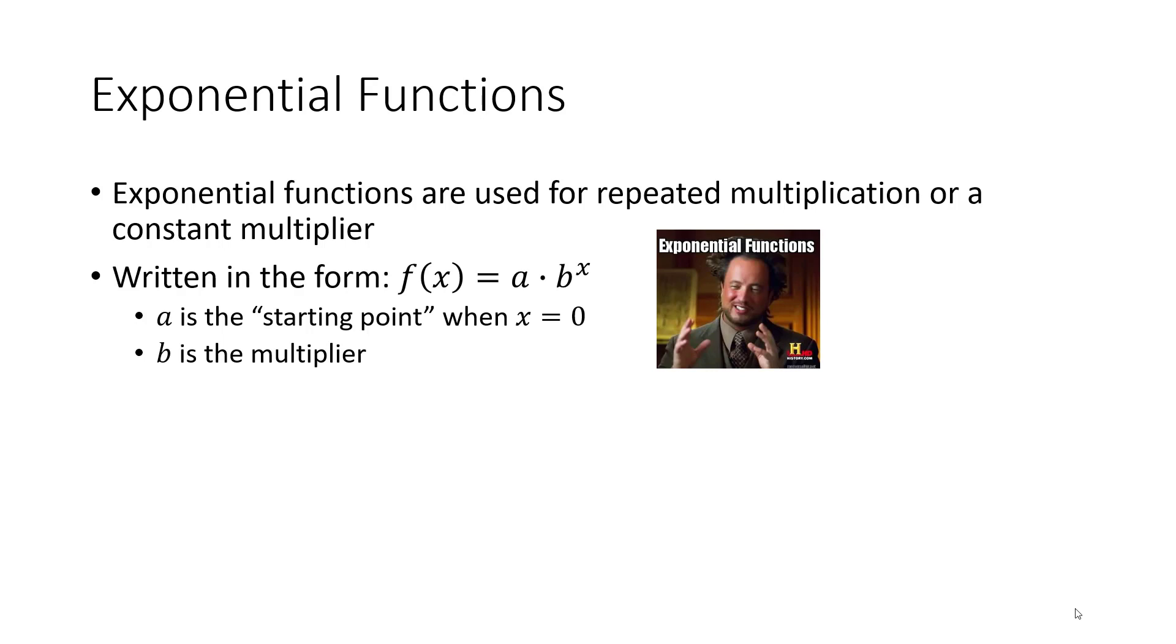They are written in the form f of x equals a times b to the x, where a is the starting point when x is equal to 0. And then it is multiplied by something over and over again. B is that multiplier that we're multiplying, and the variable x is how many times we do that multiplication.